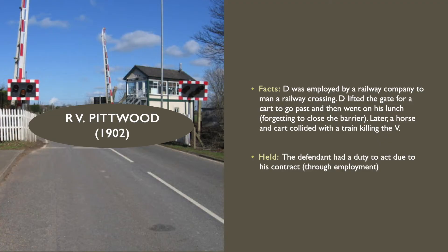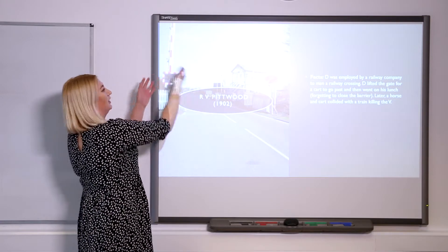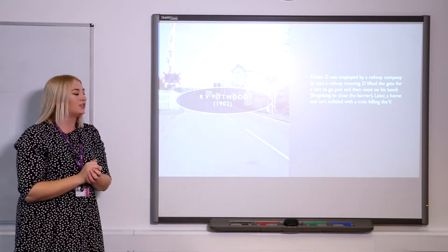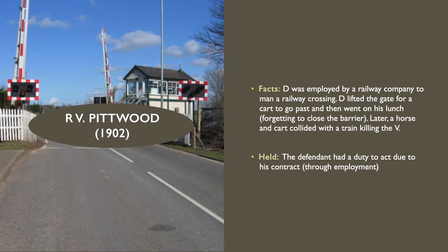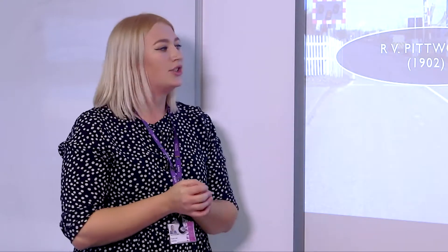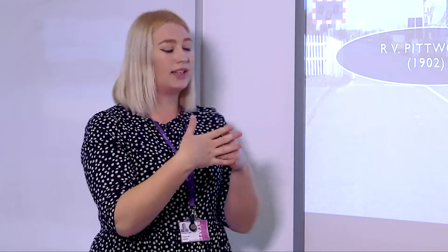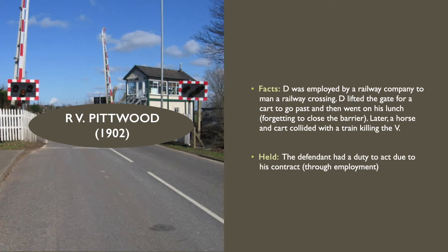The next situation is the case of Pittwood, which dates back to 1902. The defendant in this situation was employed by a railway company — his job was to manoeuvre the gates. One day, the defendant lifted the gate up to allow a horse and cart to pass and then went on his lunch, forgetting to close the barrier. Later, whilst the defendant was on his lunch, a horse and cart came past, collided with a train, and killed the train driver — caused by his failure to act.